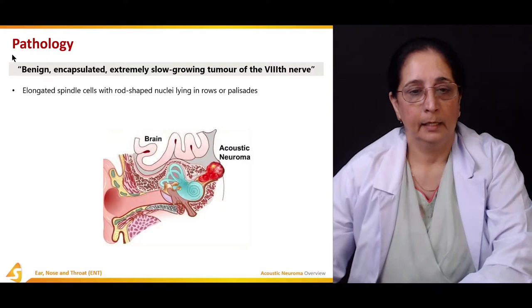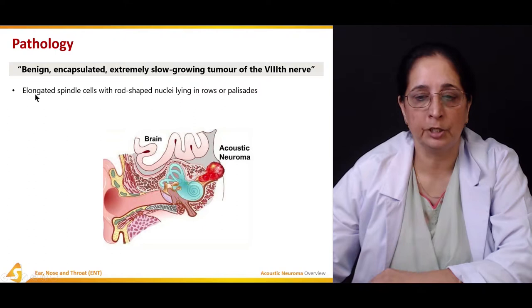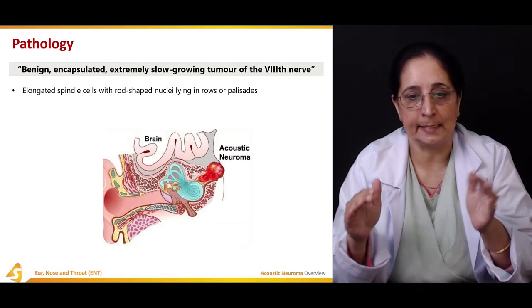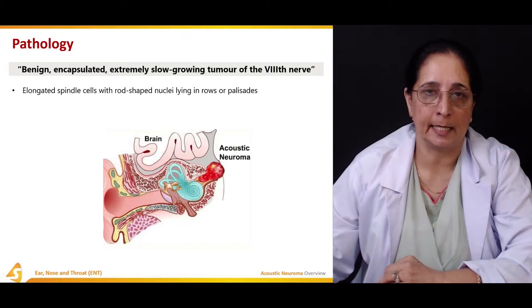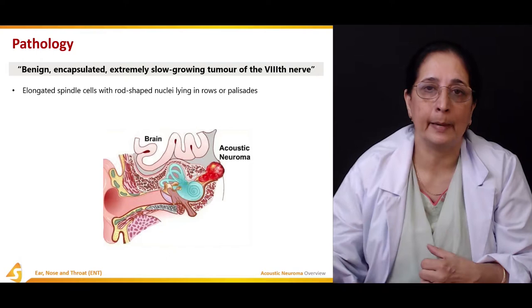The cells present inside the acoustic neuroma are spindle-shaped cells with rod-shaped nuclei. These elongated spindle-shaped cells can be arranged in straight rows or in palisades, meaning a radiating pattern.